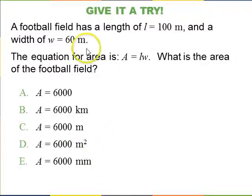So, let's give it a try. You have a football field that has a length, it's rectangular, it has a length of 100 meters and a width of 60 meters. So, the equation for the area of a rectangle is length times width. So, what is the area of the football field? All of these answers are 6,000, but the question is what are the units? So, A is no units, B is kilometers, C meters, D meters squared, or E millimeters. So, I have these give it a try questions sprinkled throughout my videos. The idea is I'd like you to think about it, commit yourself to an answer, and then proceed. So, why don't you press pause right now, think about it, and then resume when you think you know the answer.